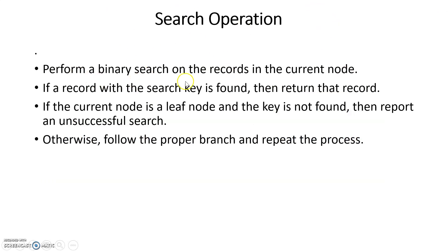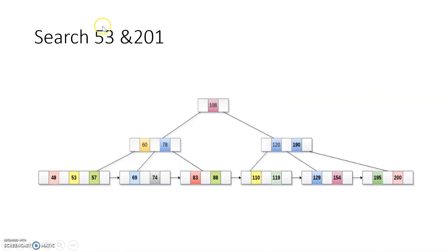The search operation in B+ tree: perform a binary search on the records in the current node. If a record with the search key is found, return that record. If the current node is a leaf node and the key is not found, report an unsuccessful search. Otherwise, follow the proper branch and repeat the process. For example, searching for 53: since 53 is less than 108, go left; 53 is less than 60, go to the leaf node; scan the node and 53 is found, so return present. Searching for 201: 201 is greater than 108, go right; greater than 190, go to that leaf node; 201 is not found, so return element not present.